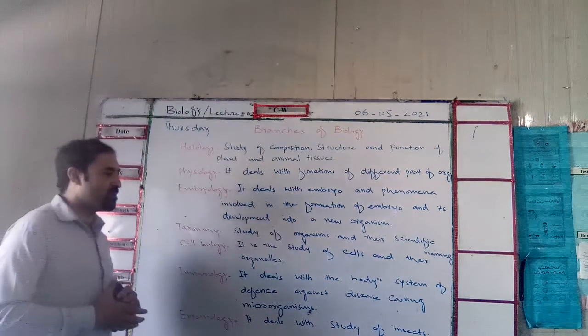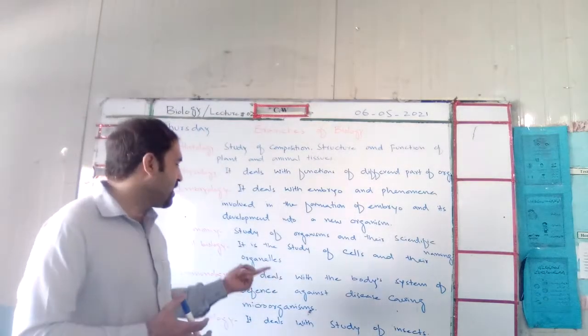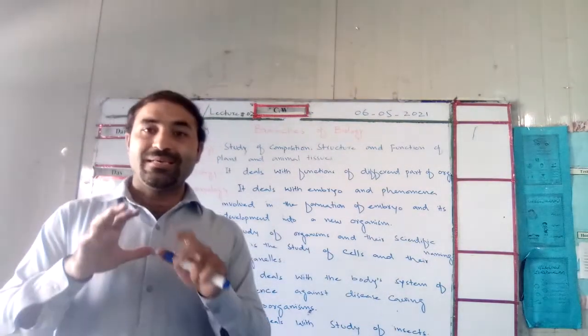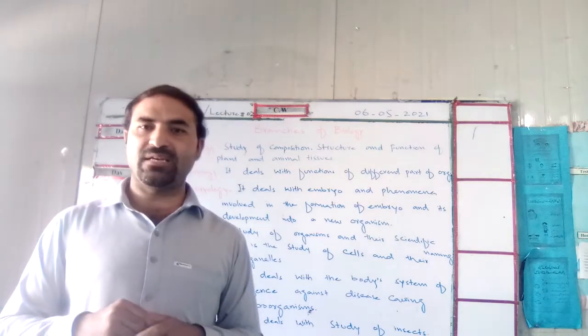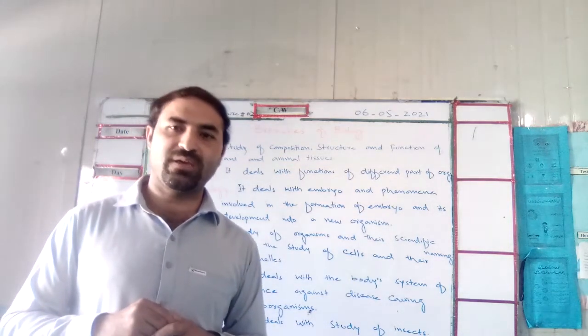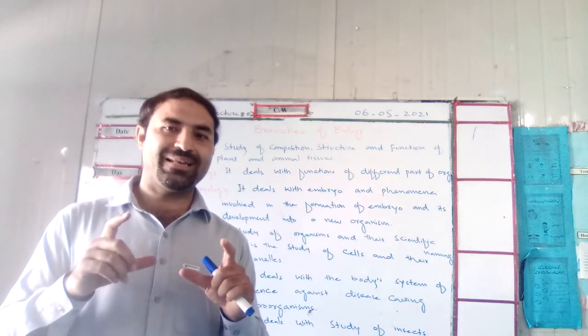Then we have cell biology. Cell biology is the study of cells and their organelles. When we study cells and organelles, that is cell biology. Cell biology is also called cytology. For example, we have two types of cells.